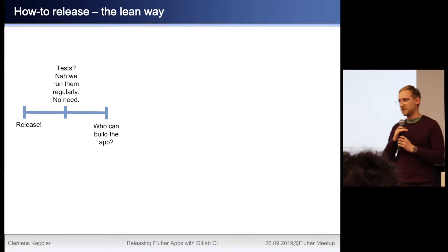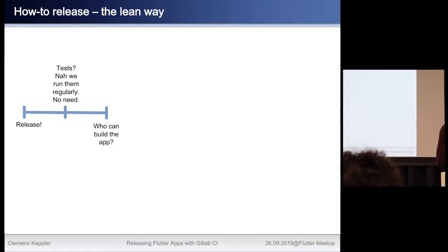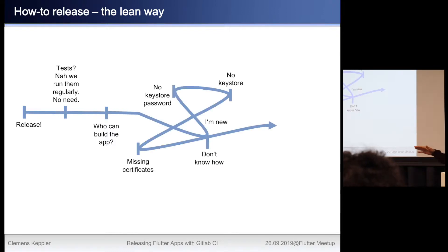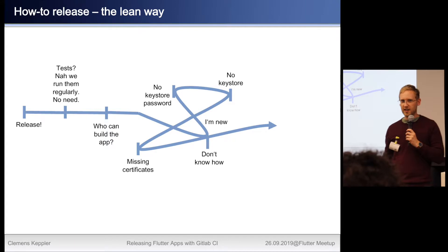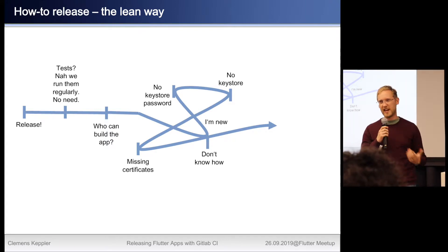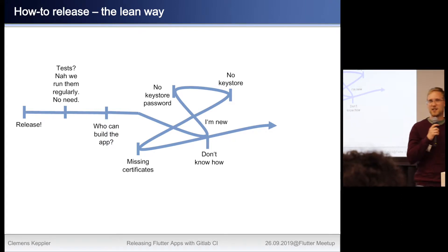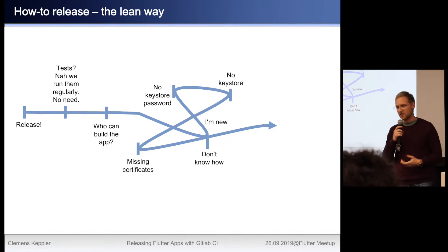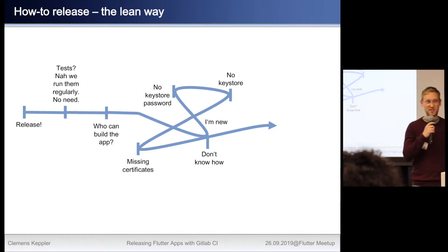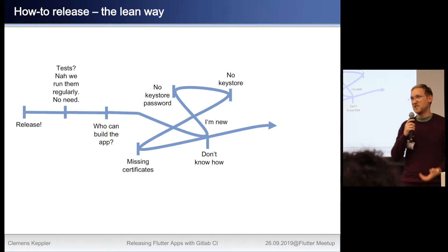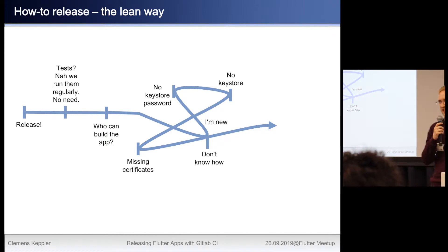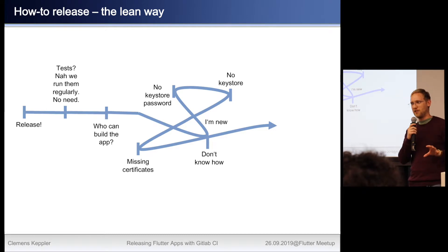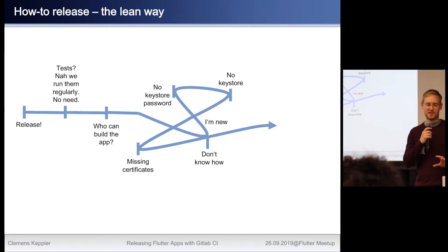So who can actually build the app? This is where it gets a bit hairy, because you get things like: I don't have the keystore. I don't have the keystore password. Only the admin has access. Where's the admin? No one knows. I don't know how it works. There's no README. Missing certificates. I'm new here, I don't even know what I'm doing. It's just really unnecessary.